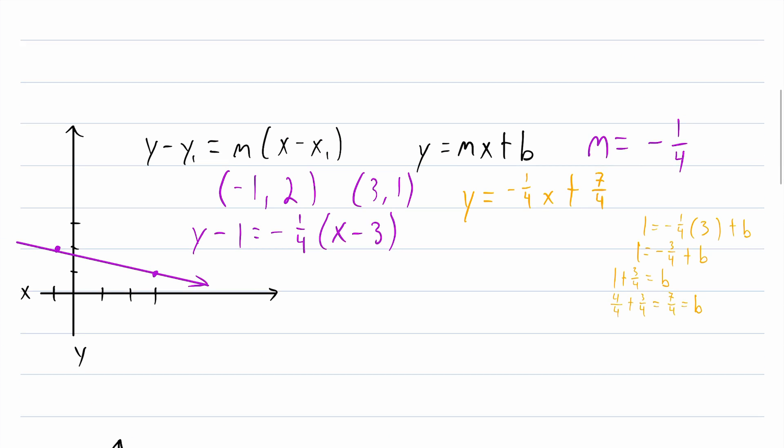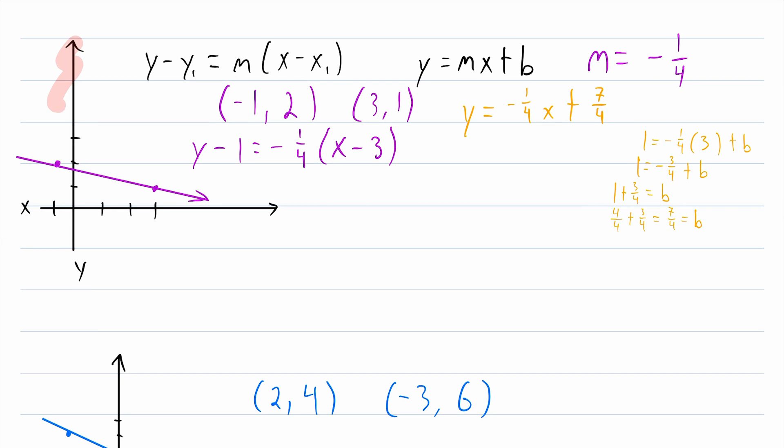And one last thing quickly before we go. I just want to point out that we could use our graph to make sure that our equations seem reasonable. A graph isn't an exact sketch of a line but we can see pretty clearly in our graph that the line should have a negative slope and we see in our equations that it does.